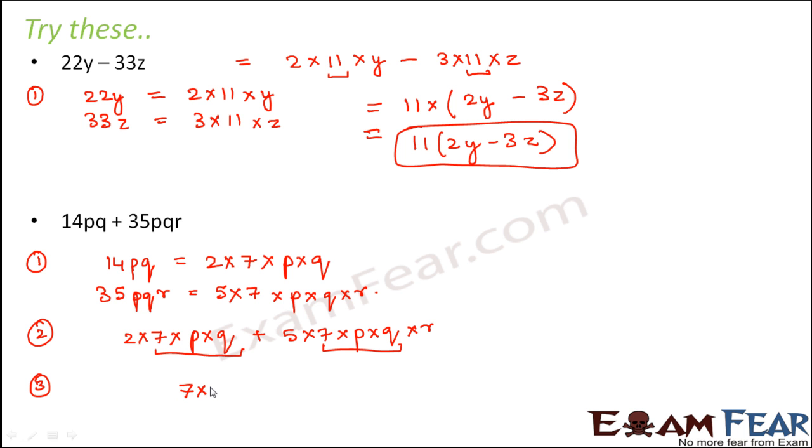We will apply the distributive law. So it is 7 into p into q. What is left inside? 2 plus 5 into r, that is 2 plus 5r. So the factor form of this expression would be 7pq into 2 plus 5r.